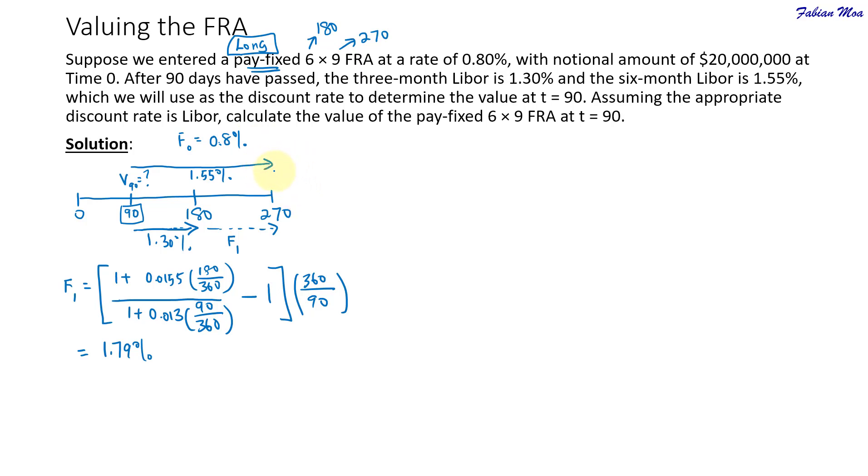When you look at the timeline, I'll just draw it separately here. This is day 90 and this is day 180, and day 270. On day 270, the relevant cash flow will be the difference in the forward rates, which is 1.79% minus 0.8%. If you are calculating this from a long position, you take the updated FRA rate minus the initial FRA rate. We need to convert this into dollar terms, so we multiply by $20 million and adjust for the number of days, which is 90 over 360.